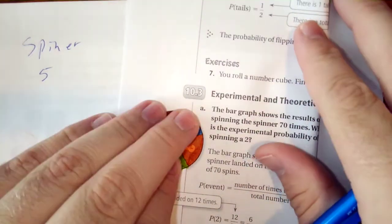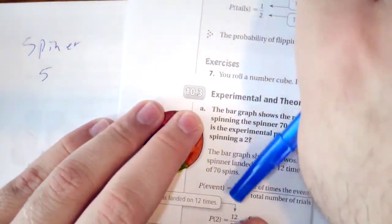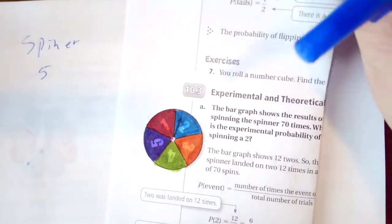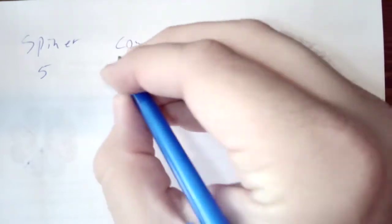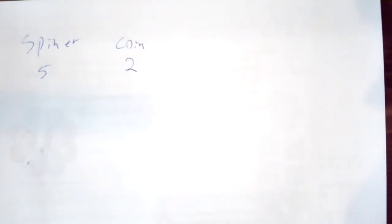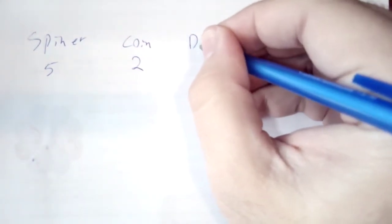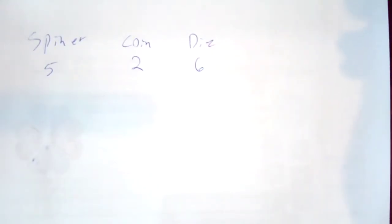We have this spinner that has 1 through 5. We have a coin with 2 possible outcomes. And then we have a die with 6 possible outcomes.